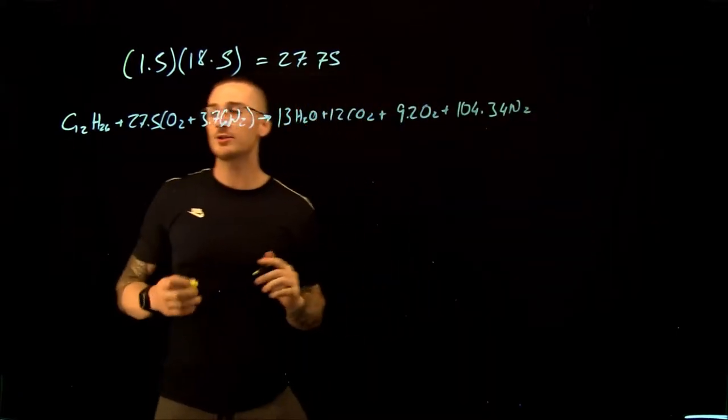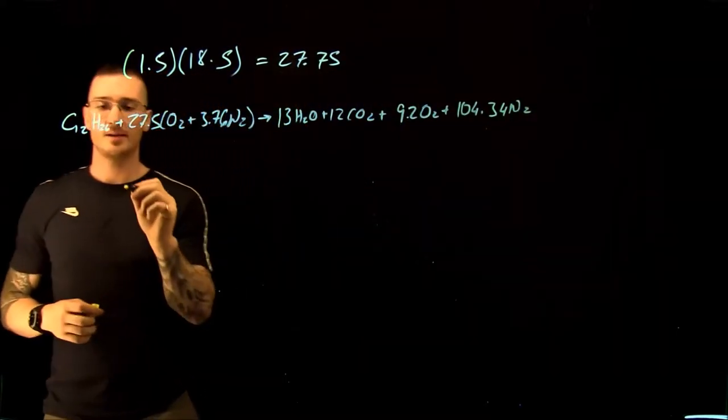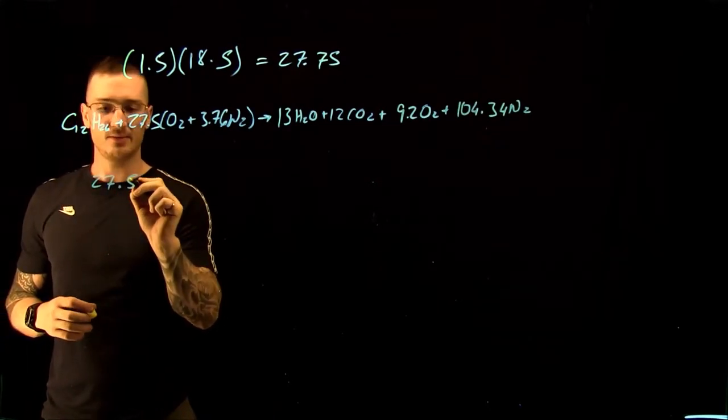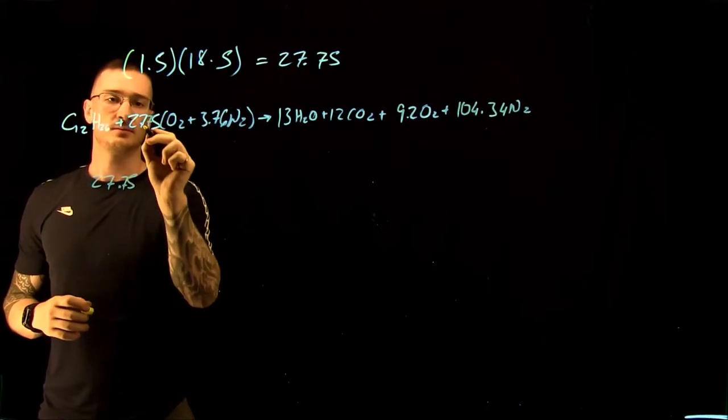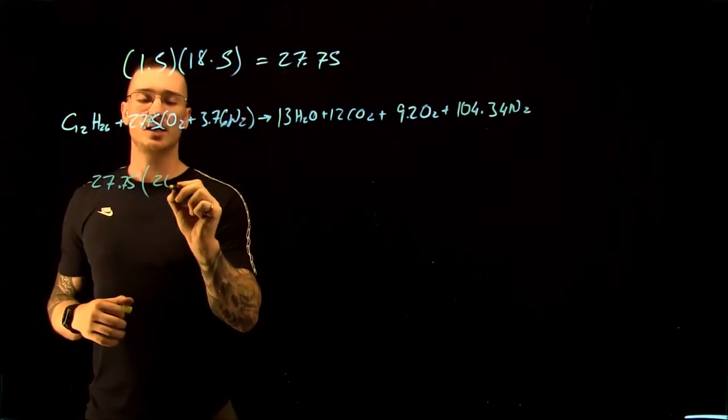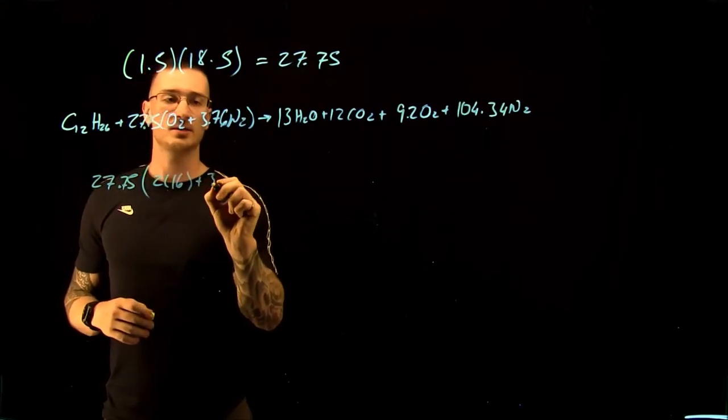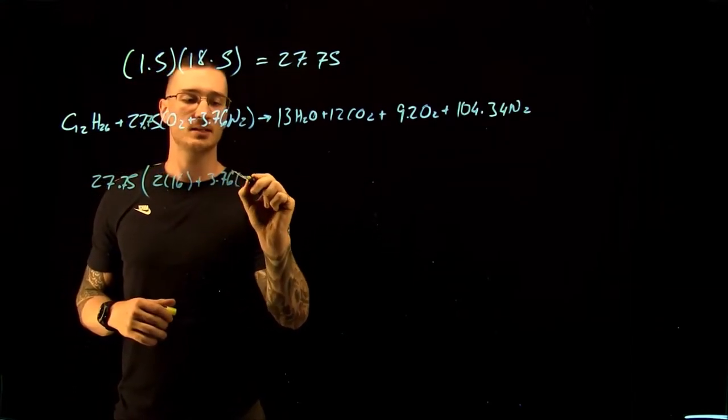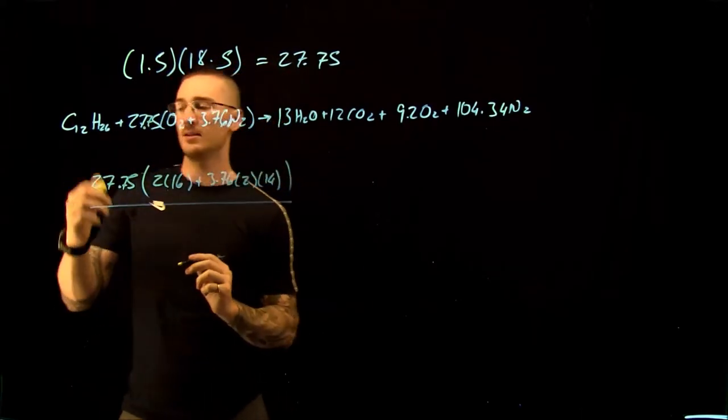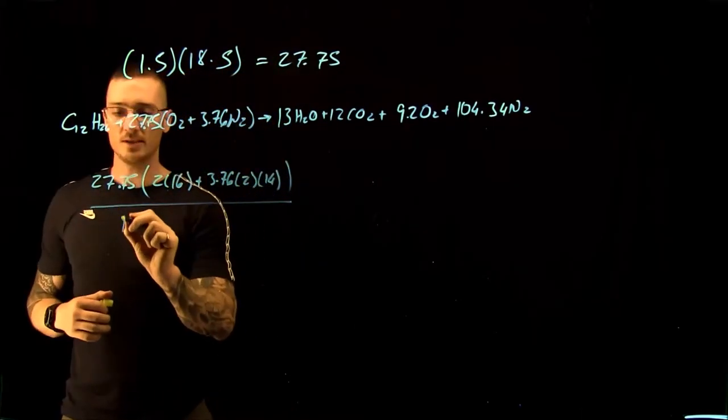So our air-to-fuel ratio here becomes 27.75 times the molar mass of our air. So that's 2 times 16 plus 3.76 times 2 times 14, divided by the molar mass of our fuel.